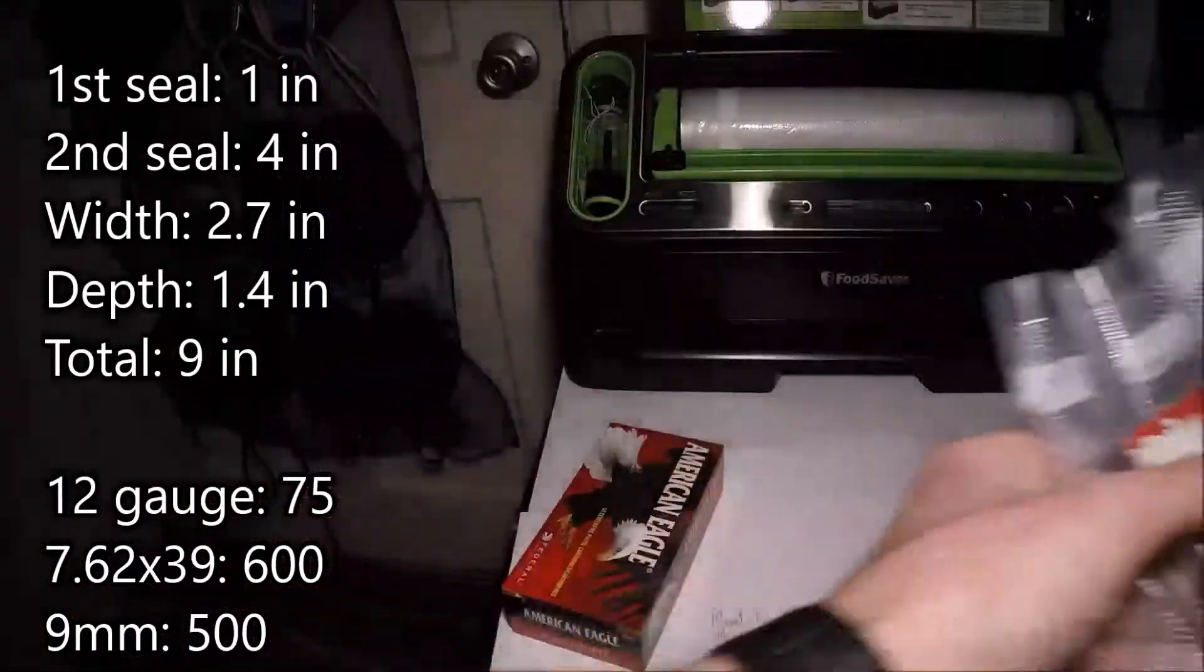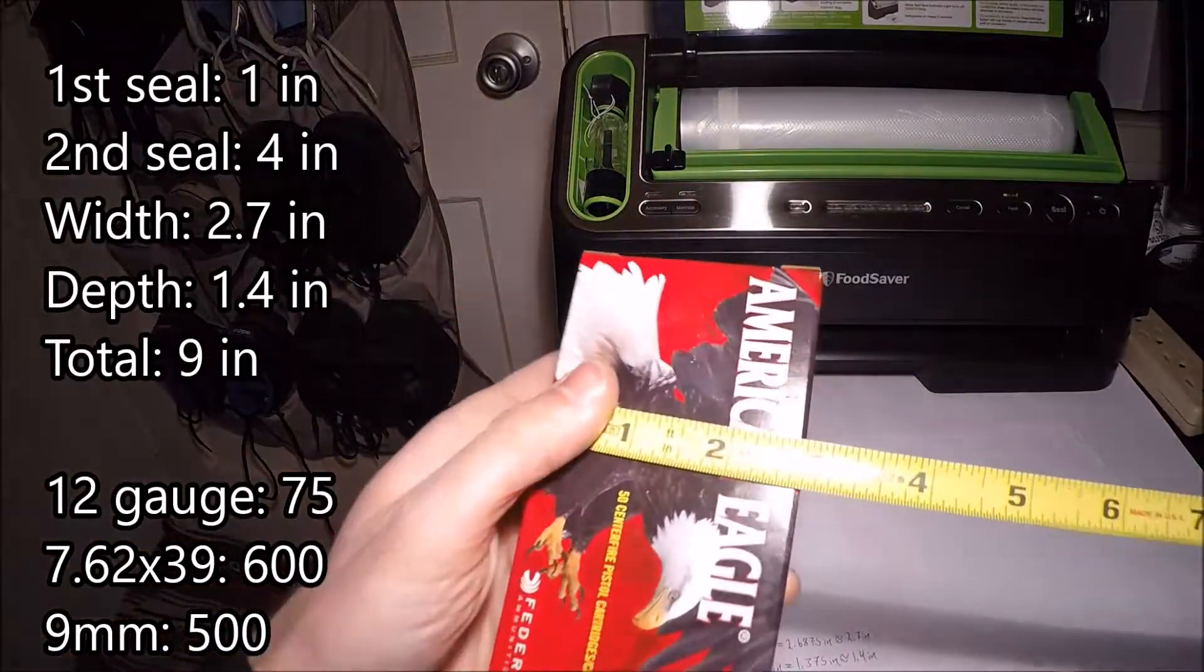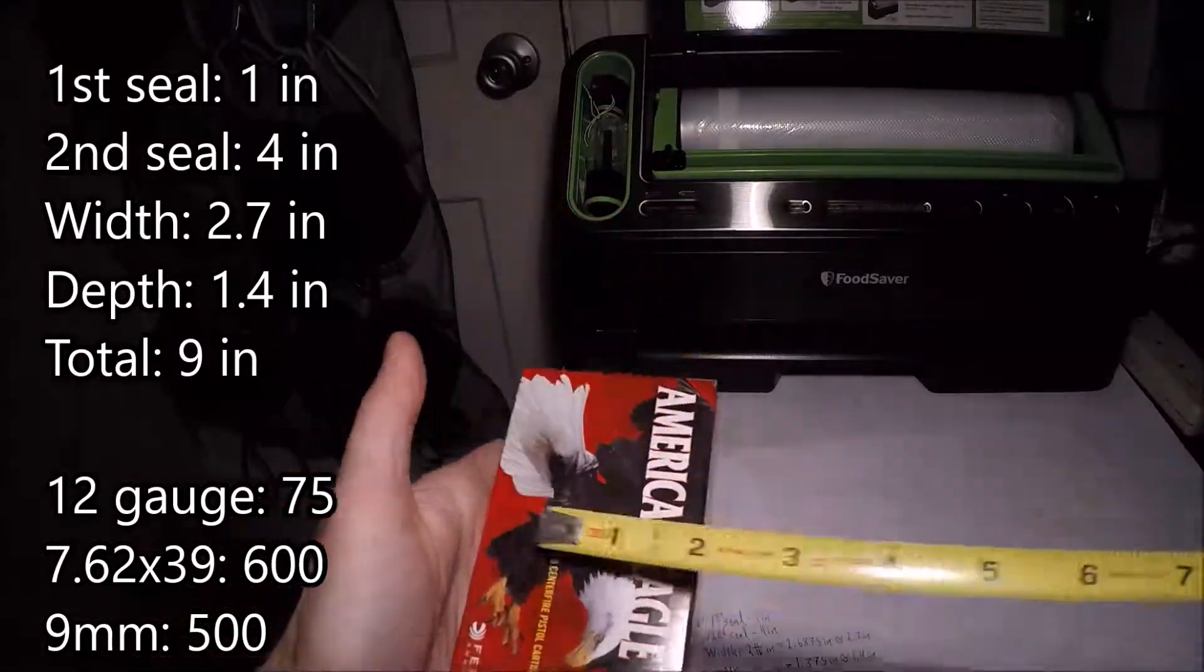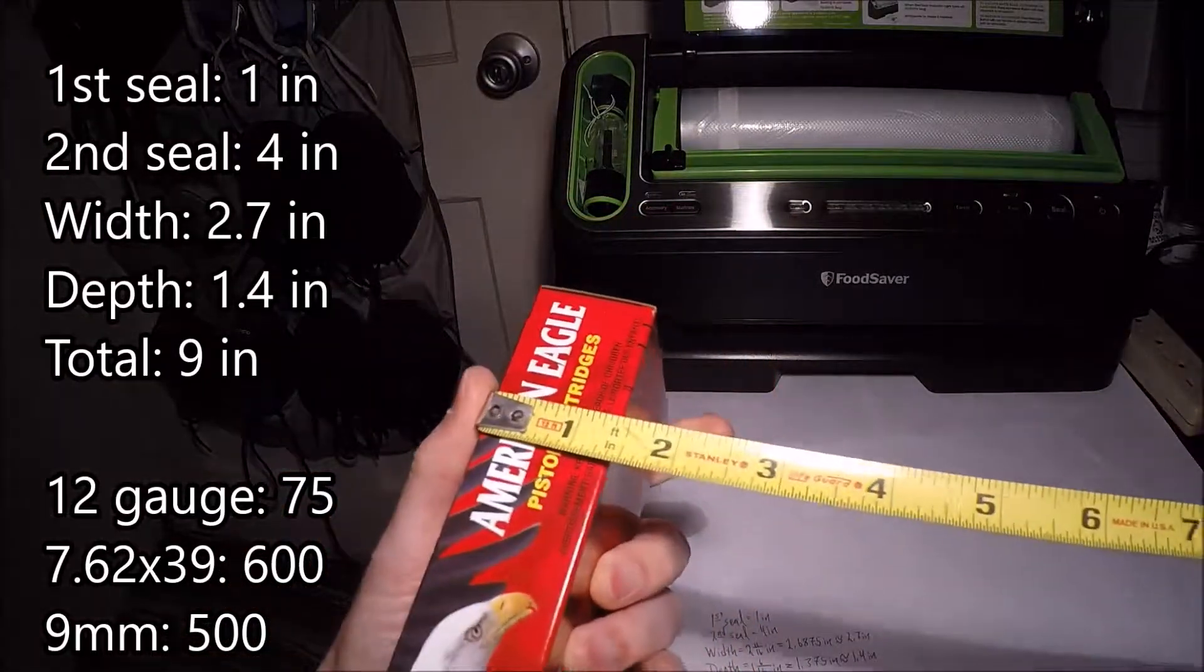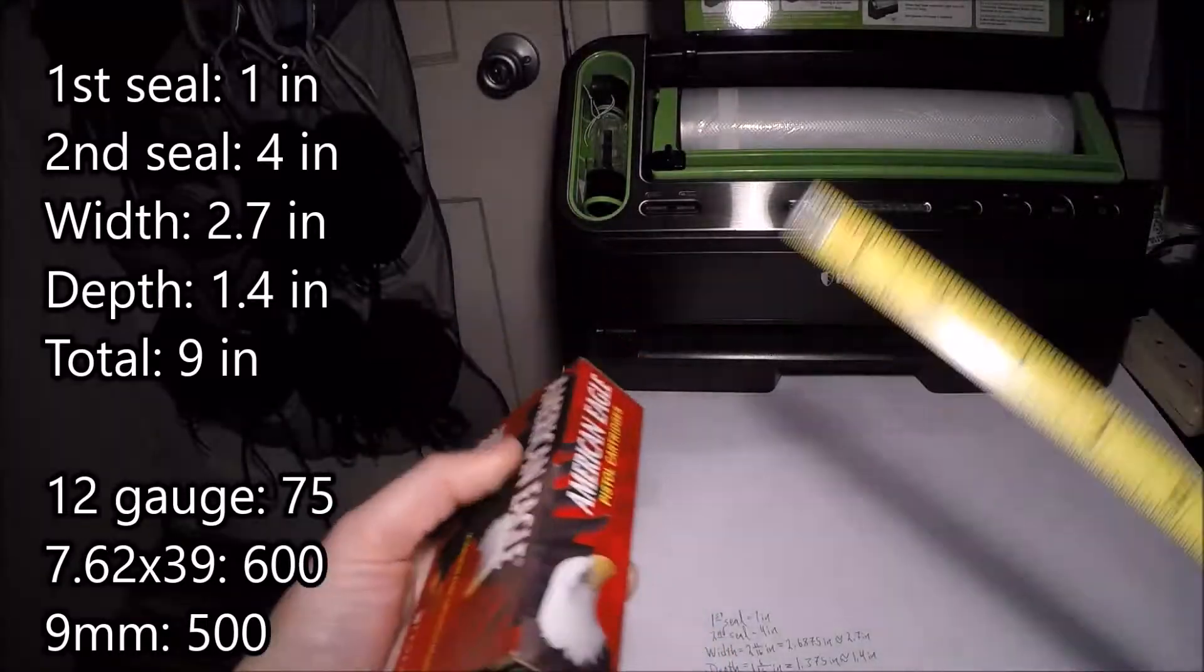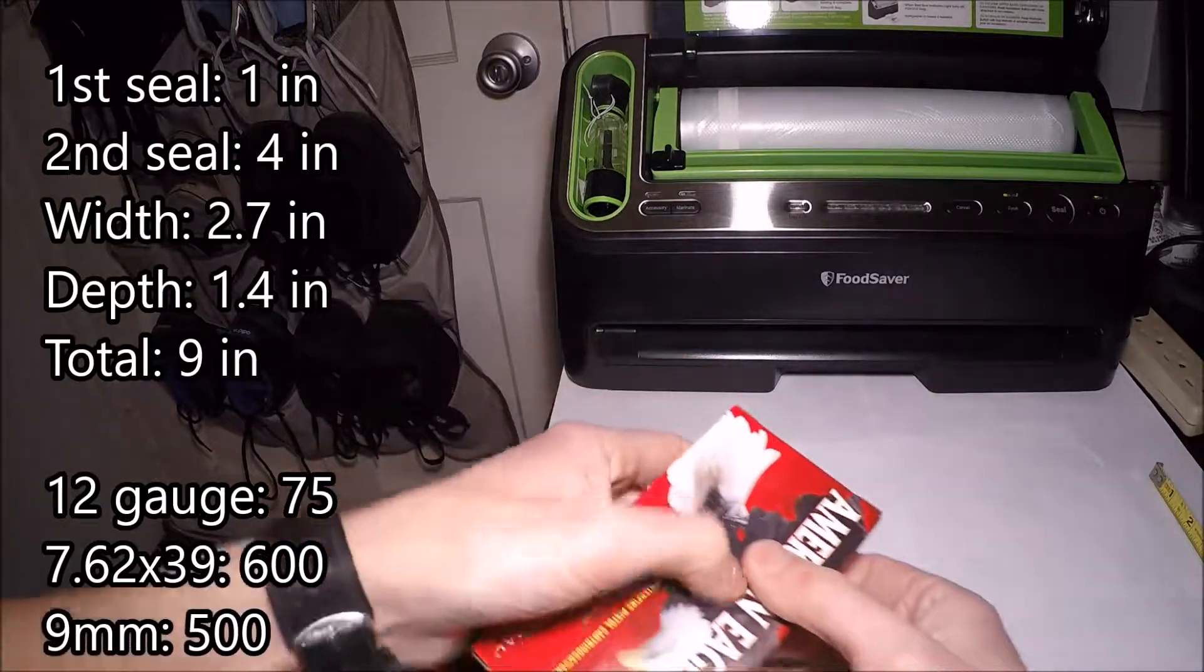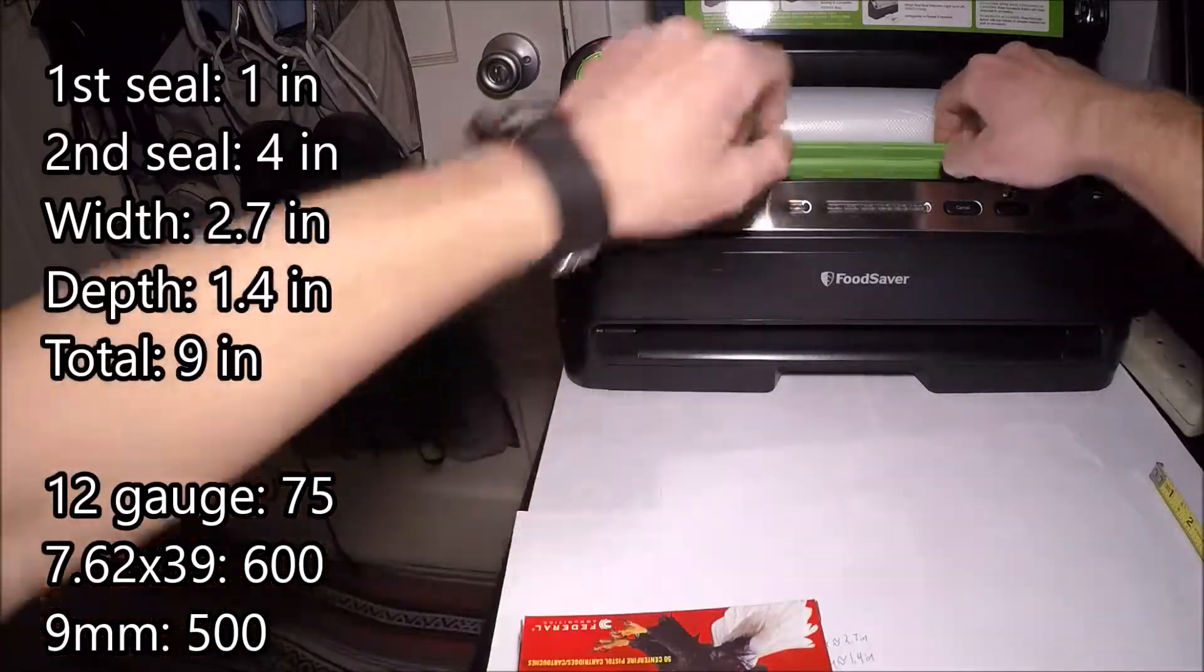When we look at the actual box itself you'll notice that you'll need about 2.7 inches across the top here and about 1.4 inches across the side here. When you add all those up you'll get about 9.1 inches which I'm rounding down to about 9 inches. That's how much we're going to need to cut out of our roll.